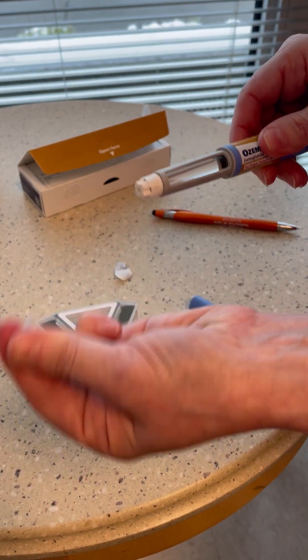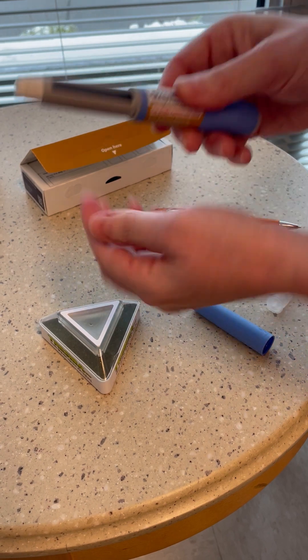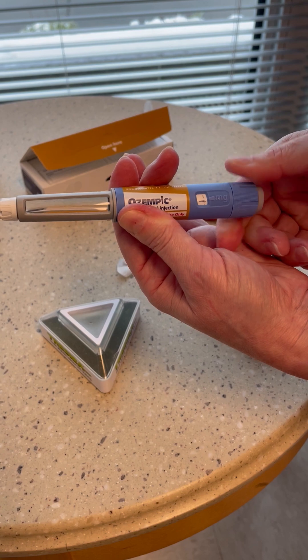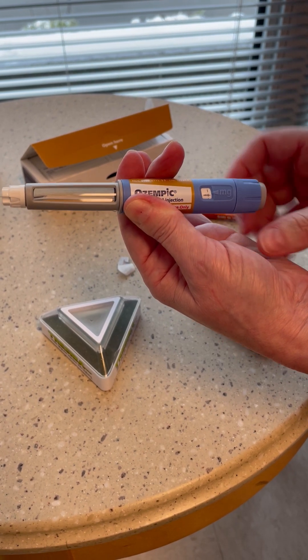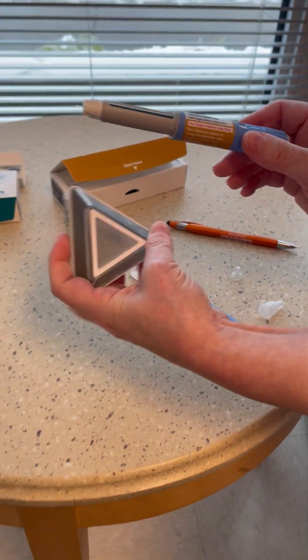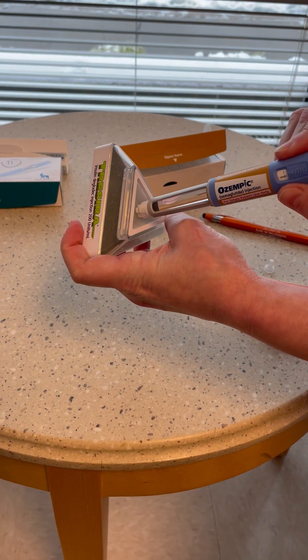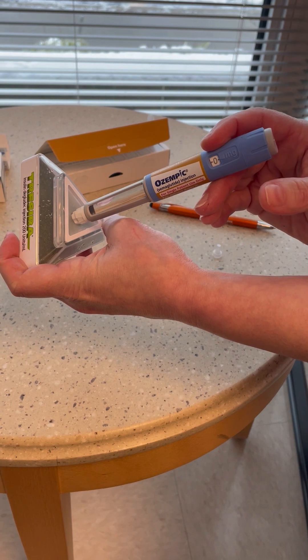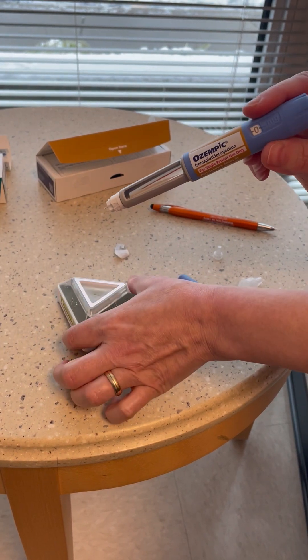Remove both caps and find the dash that we counted to—14 dashes, equivalent to 0.5 milligram dose. Clean the skin, inject it perpendicular to the skin and press the button to deliver the medication. Then count to six and remove the needle.